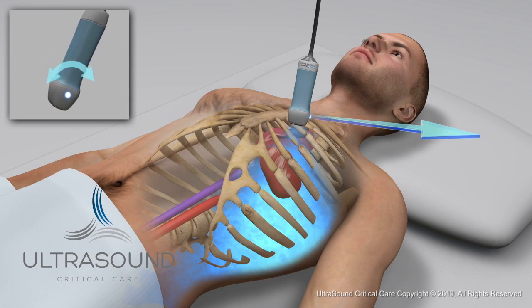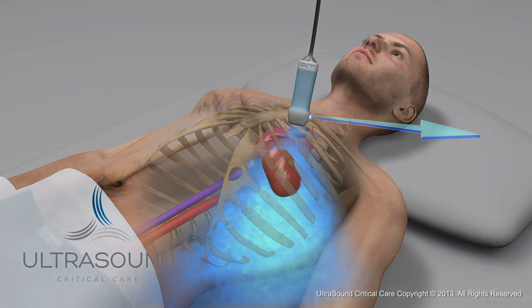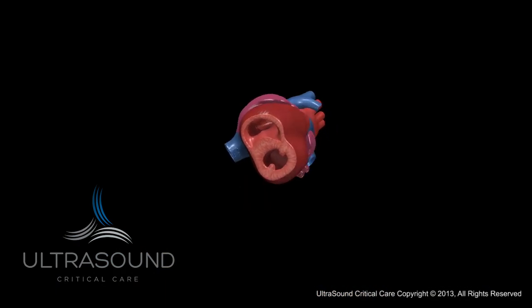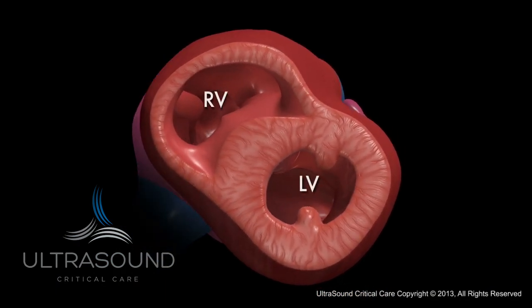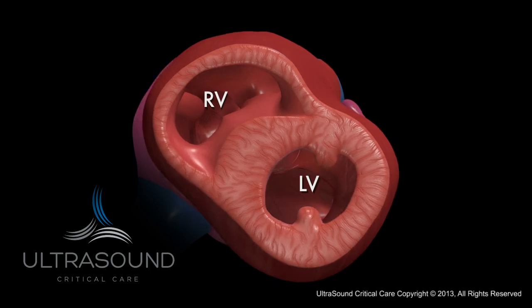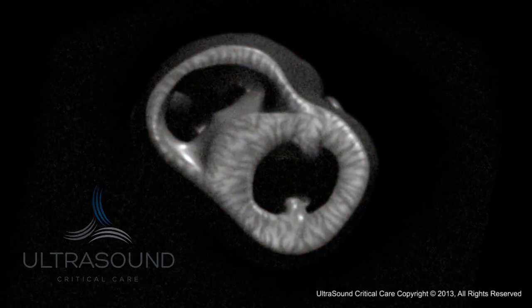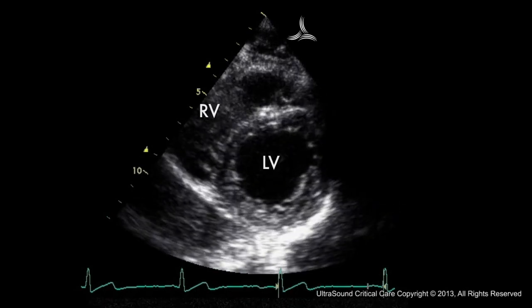Tilt and rock your probe to obtain the best view. Note we are visualizing the papillary muscle view of the left ventricle. The chambers are also labeled for each structure.